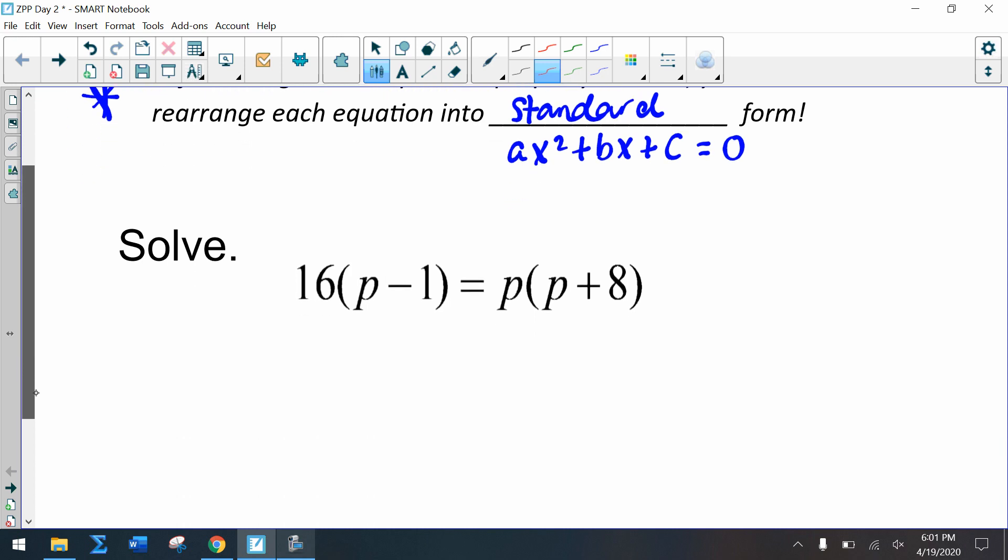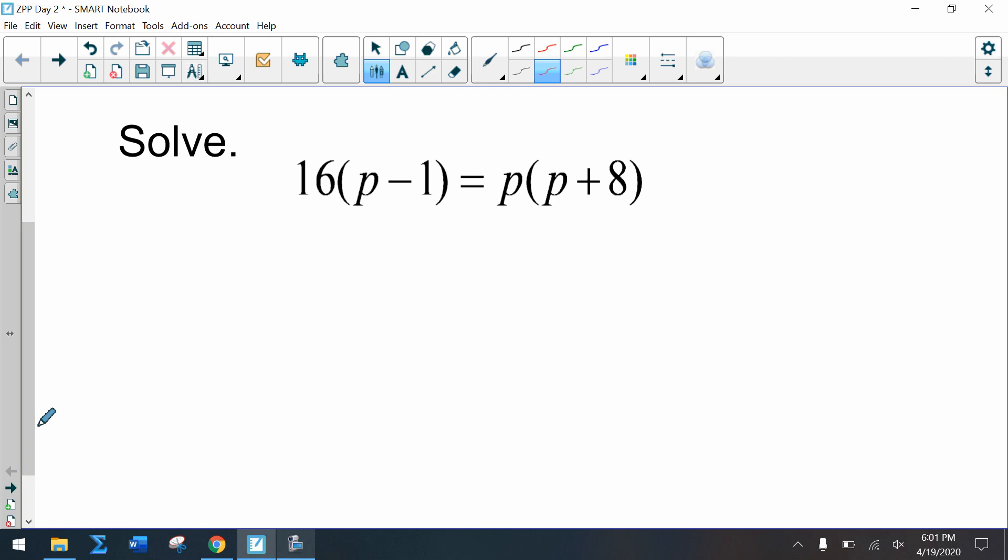So let's look at this first problem. Is this problem in standard form? No it is not, so we need to rearrange the problem so that it is. So I have 16p - 16. When I distribute here I get equals p² + 8p. Now since p is positive, p² is positive over on the right side, I'm deciding to bring over everything from the left to the right.